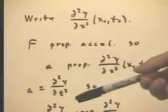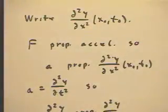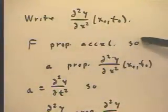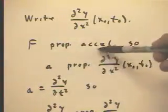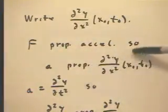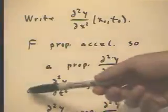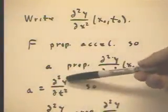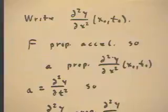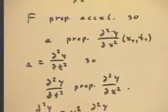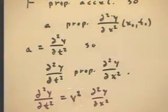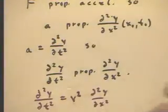Force is proportional to this second partial derivative, and force is also proportional to acceleration, so the acceleration has to be proportional to this quantity as well. Our acceleration, which is the second derivative of y with respect to t, is proportional to the second derivative of y with respect to x. So the second partial derivative of y with respect to t is proportional to the second partial derivative of y with respect to x.